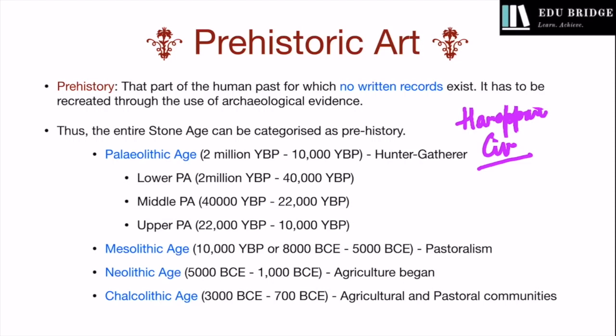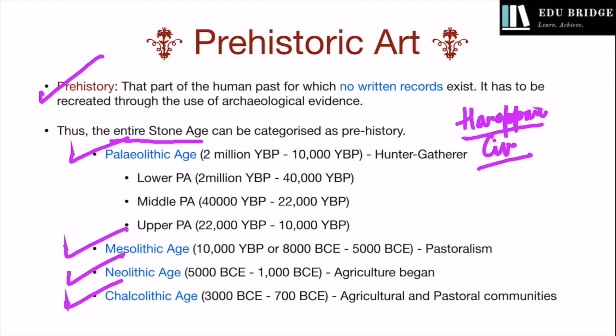That means all the periods before the Harappan civilization can be categorized as prehistory. Thus, the entire stone age of India was part of prehistory. The Indian stone age has been divided into different phases such as the Paleolithic age, Mesolithic age, Neolithic age, Chalcolithic age, etc.